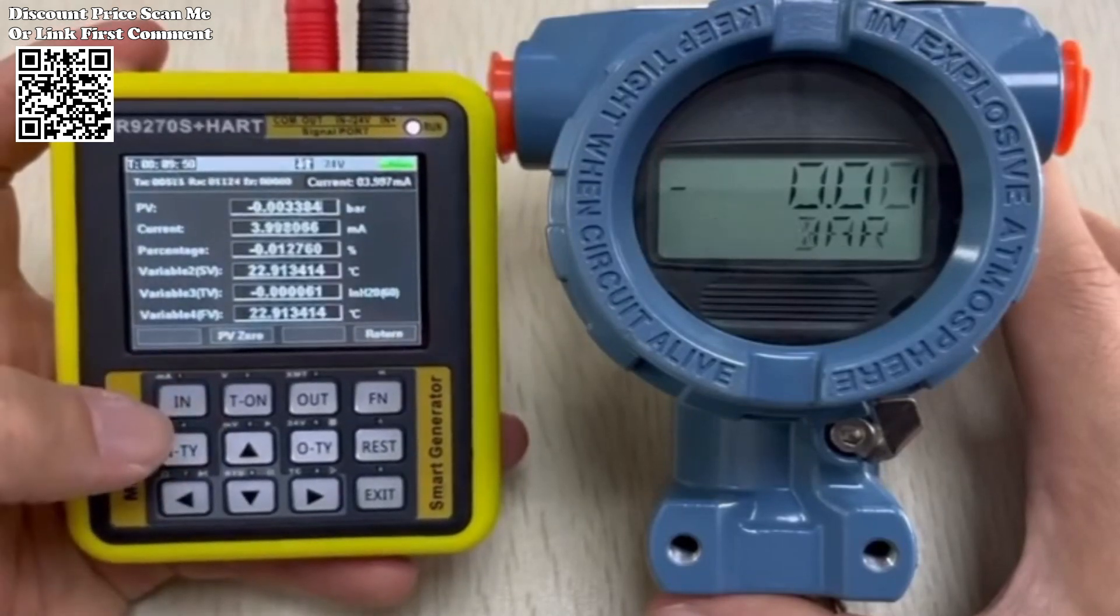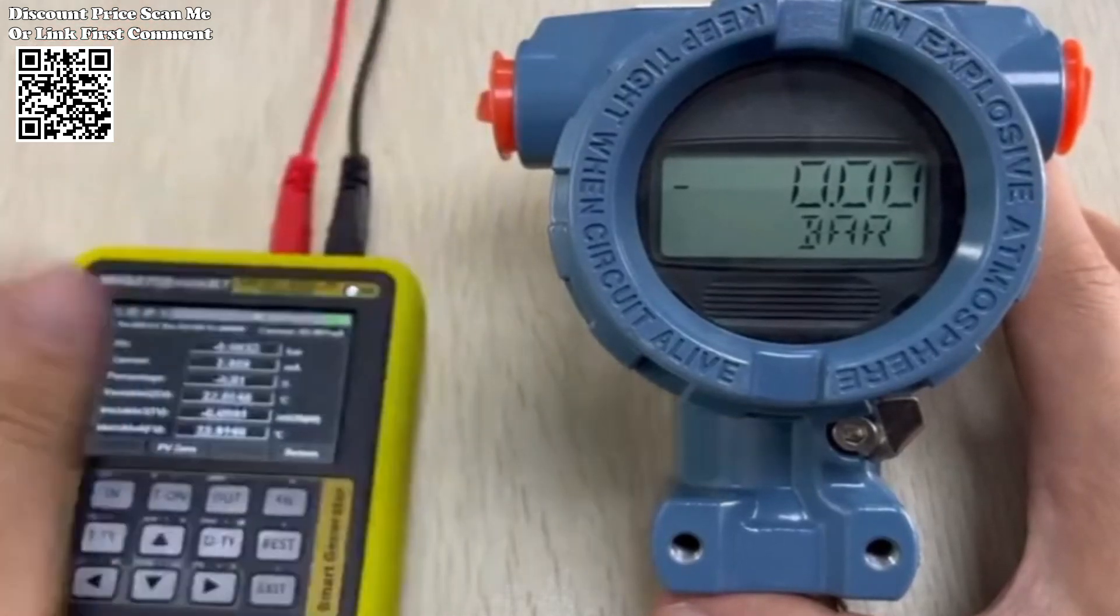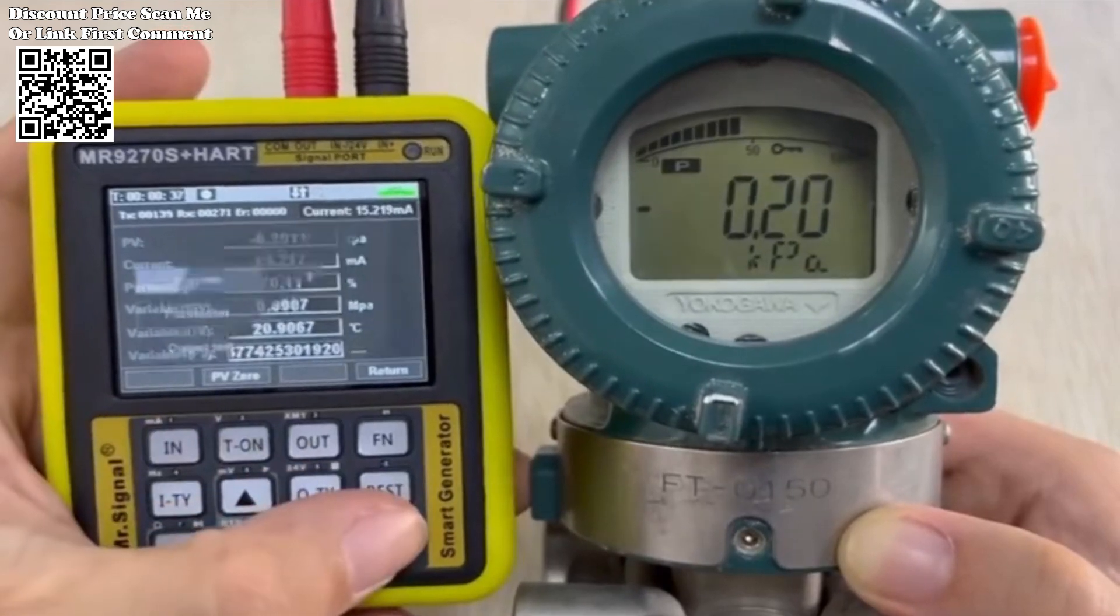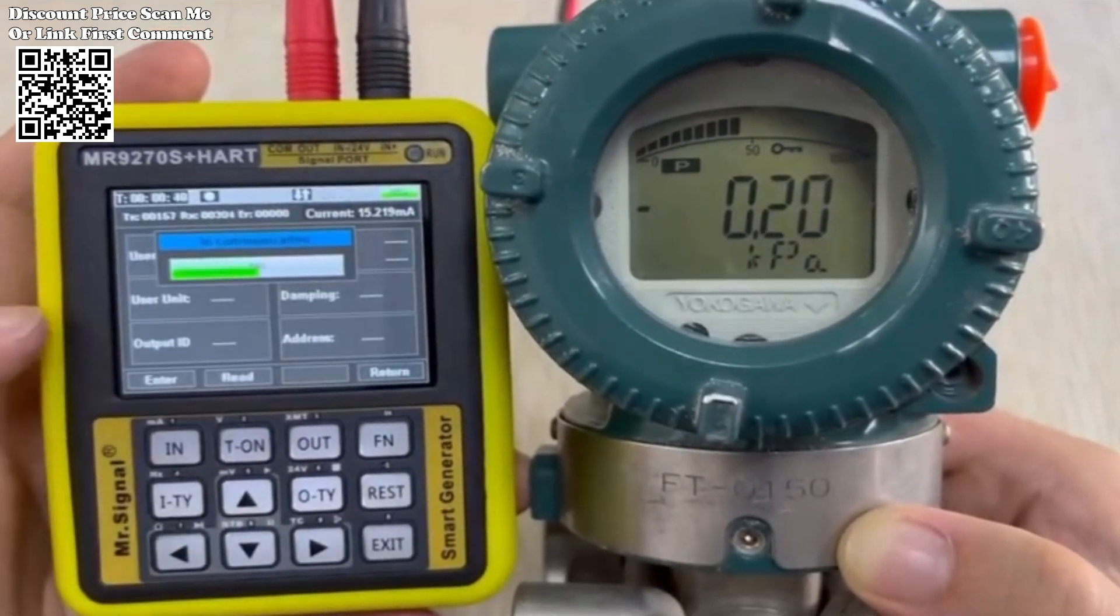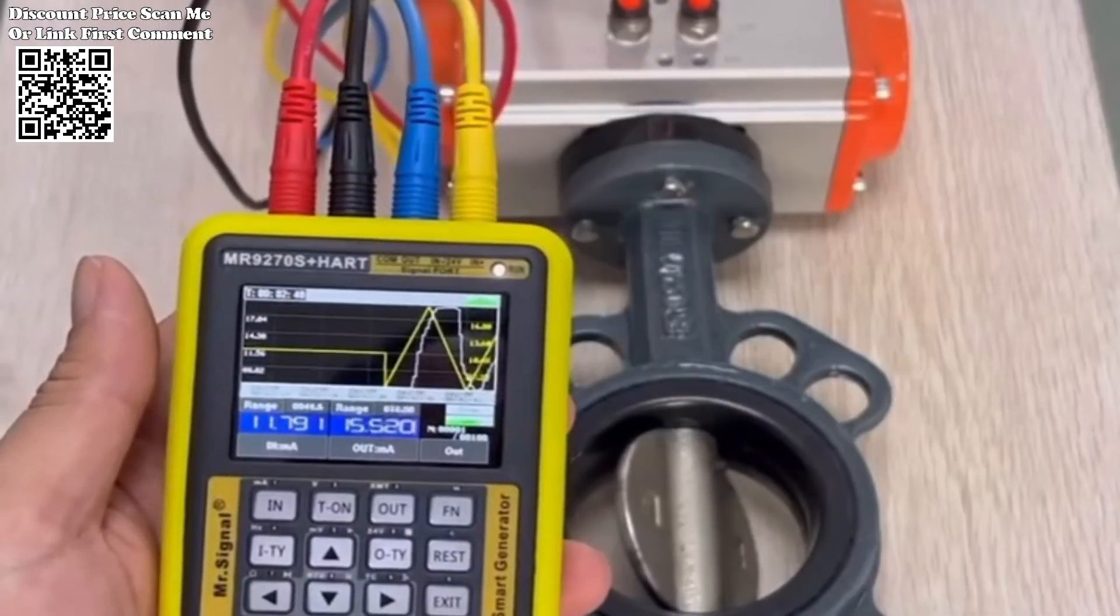The MR9270S Plus HART signal generator, available on AliExpress, emerges as a versatile solution for calibrating and testing various signals used in process control and automation systems.